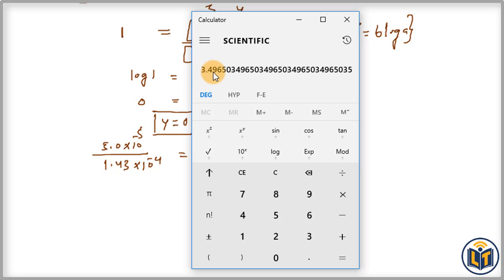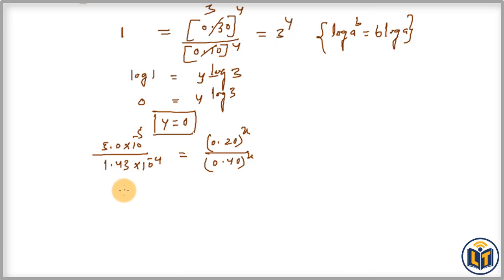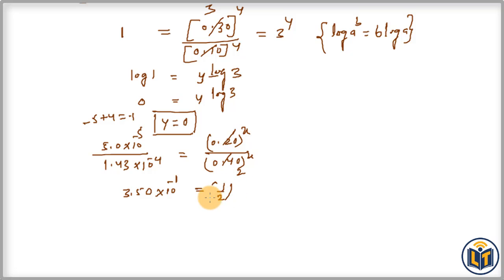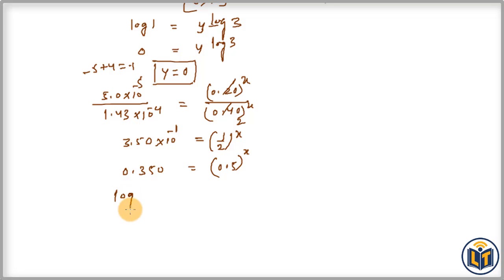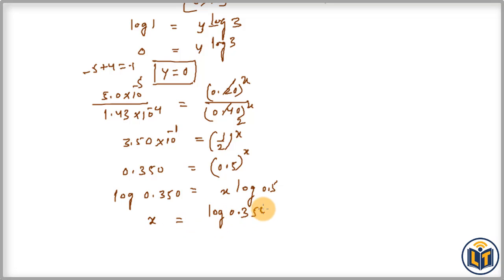Dividing the numerical values: 5.0 divided by 1.43 gives approximately 3.50, and subtracting the exponents gives 10⁻⁵ divided by 10⁻⁴ = 10⁻¹. So 3.50 × 10⁻¹ equals (0.20 / 0.40) raised to power X, which is (1/2)^X, or 0.5^X. We can also write 0.350 = 0.5^X. Taking log on both sides: log 0.350 = X · log 0.5. Rearranging gives X = log 0.350 / log 0.5.